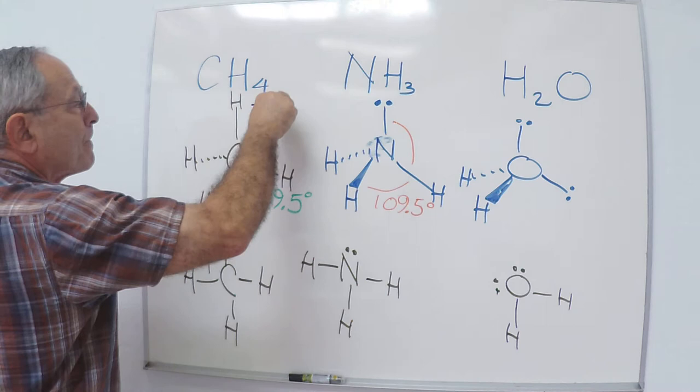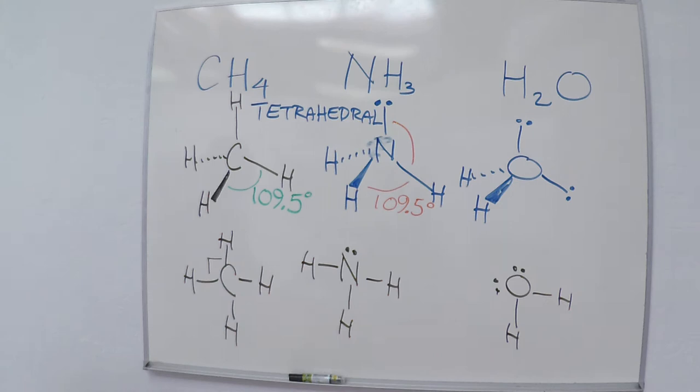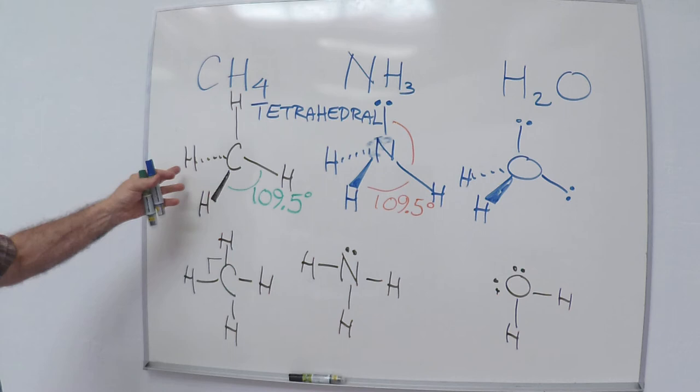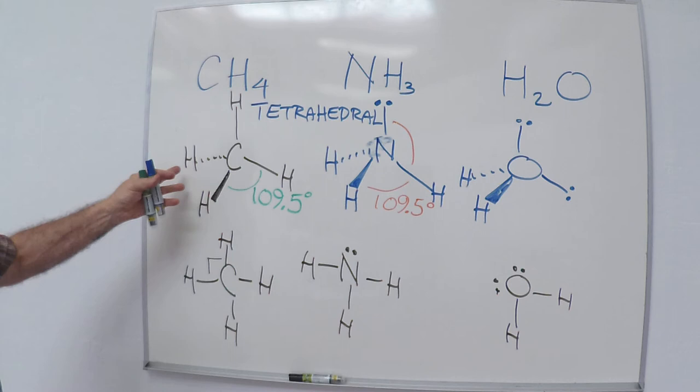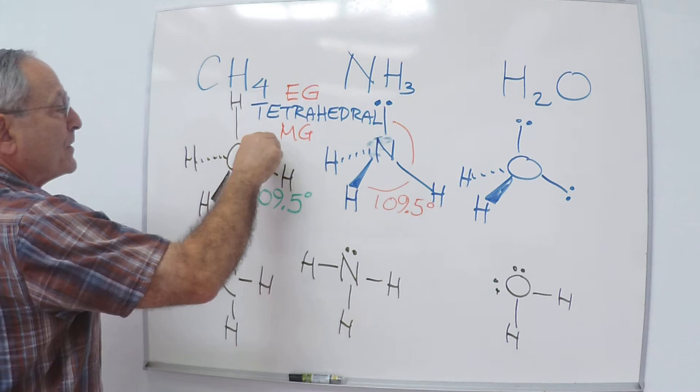However, when we describe the molecular geometry of a molecule, we ignore the lone pairs and only describe geometrically the relationship between the atoms that are bonded together in the molecule. In the case of methane, there's no change. You have four atoms attached to the carbon, you don't disregard any of them. So, the electronic geometry of the methane is tetrahedral. The molecular geometry of the methane is also tetrahedral.